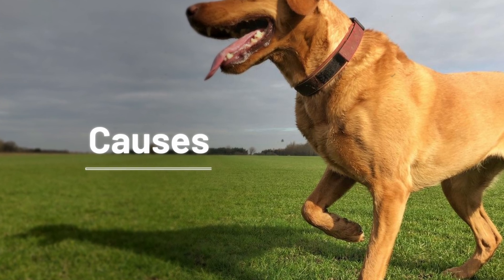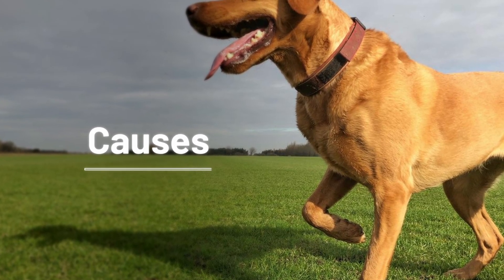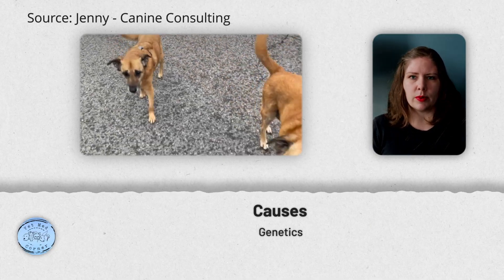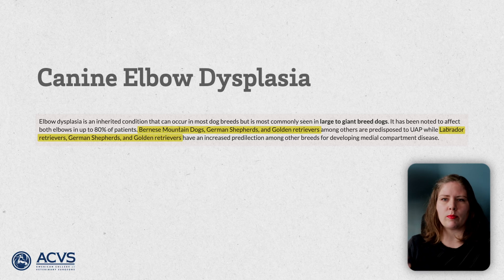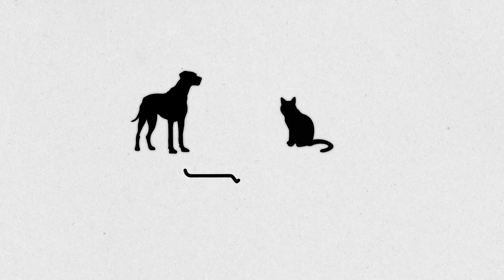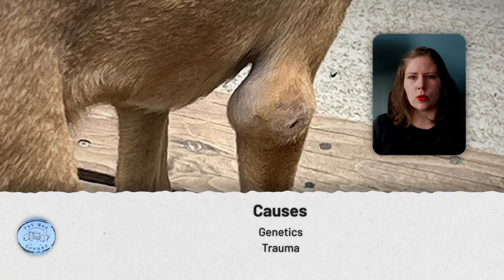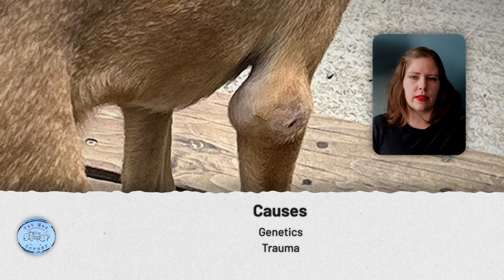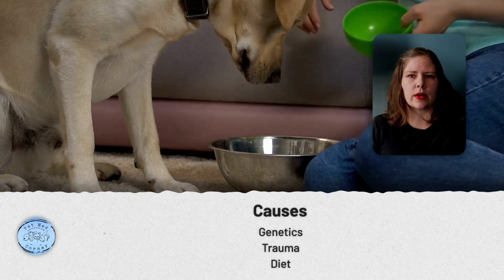There are a number of theories about the specific causes and risk factors for elbow dysplasia. We do think that genetics is a major and significant contributing factor, and we do see more elbow dysplasia in large and giant breed dogs, with some breeds being overrepresented compared to others. Of course there are exceptions, so every single dog and cat can develop elbow dysplasia. Most people think that elbow dysplasia is at least partially a multifactorial issue. We also think that trauma to the elbow can result in elbow dysplasia, and we suspect that diet formulation is also a contributing factor.